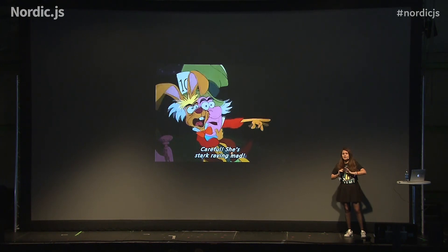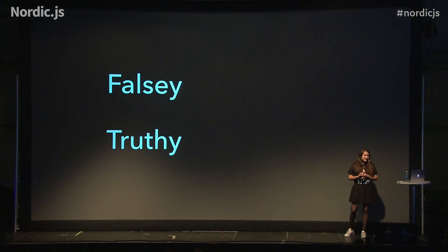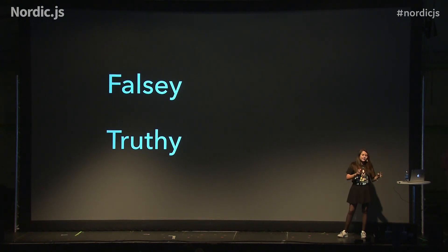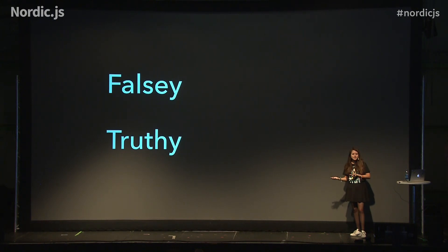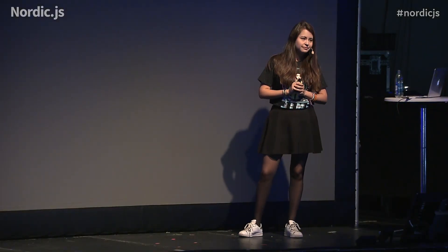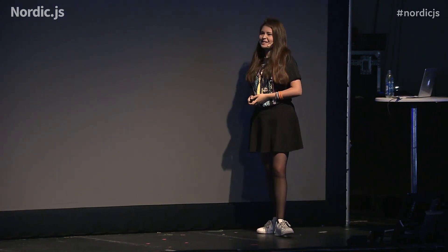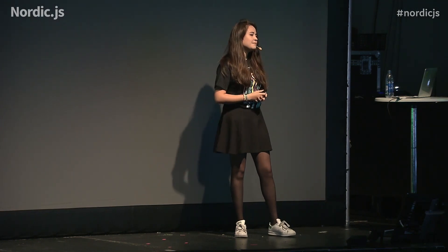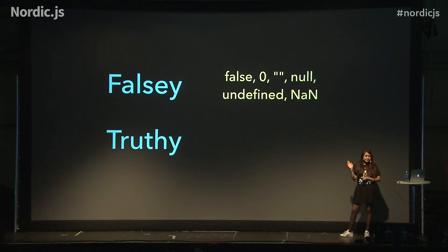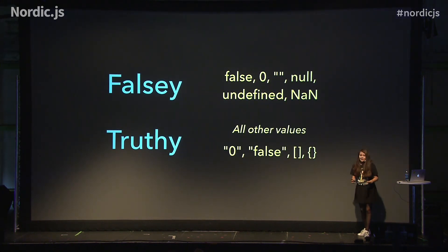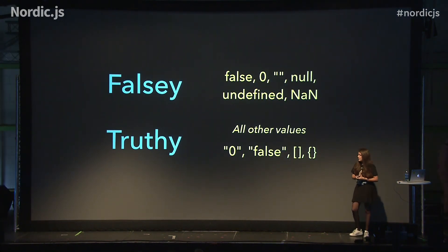Before I actually start explaining this, I'm going to explain another really, really basic concept of JavaScript, which is falsy and truthy values. Everything in JavaScript has a Boolean value — everything can either be falsy or truthy. Here's my own golden rule: everything in JavaScript is truthy, unless it's falsy. What I actually mean is that falsy values in JavaScript by default are: false, zero, an empty string, null, undefined, and NaN. And truthy values are everything else — a string zero, a string false, an empty array, or an empty object.